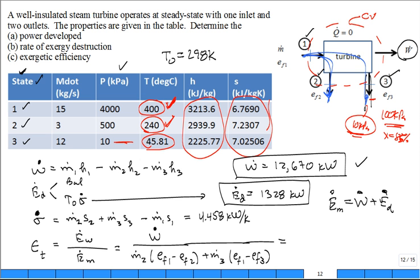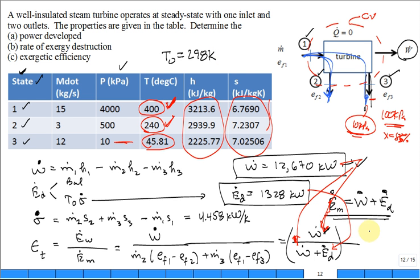So why not use the exergy balance equation to rewrite the denominator such that the exergy efficiency of the turbine is the power out. Hey, that's what we just calculated from part A. And the power out divided by the power out plus the destruction. So when you calculate the exergy efficiency of the turbine or the second law efficiency of this turbine, you find that it's right at 90.5%.